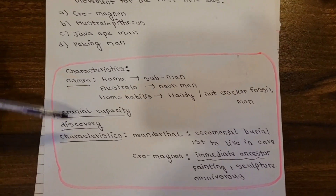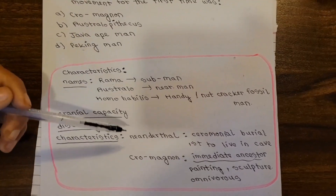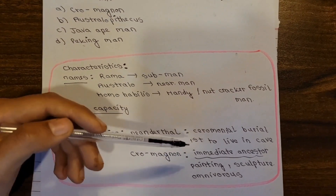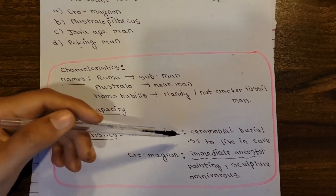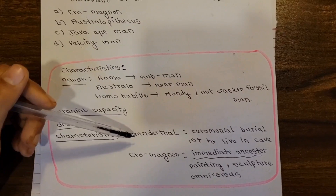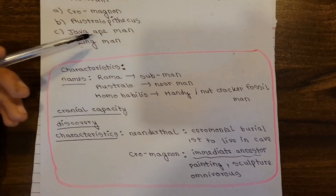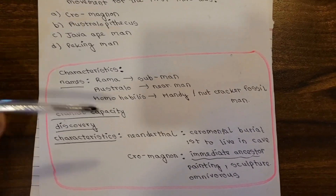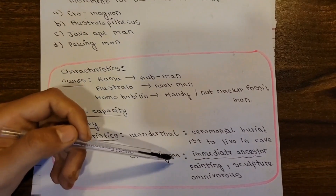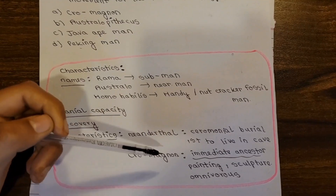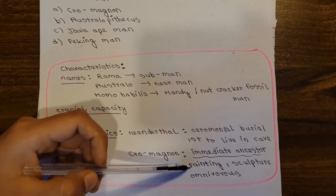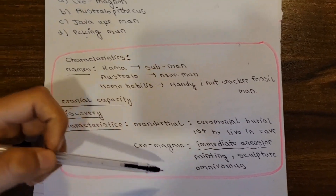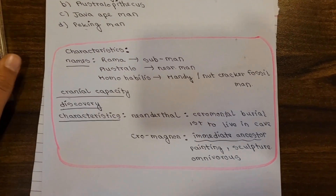Key characteristics to remember: Neanderthal man was the first to live in caves and the first to perform ceremonial burials. Cro-Magnon man is also known as the immediate ancestor of modern man. His major characteristic features were painting, making sculptures, and being omnivorous. These details are very important for exams. That's the overview — thank you.